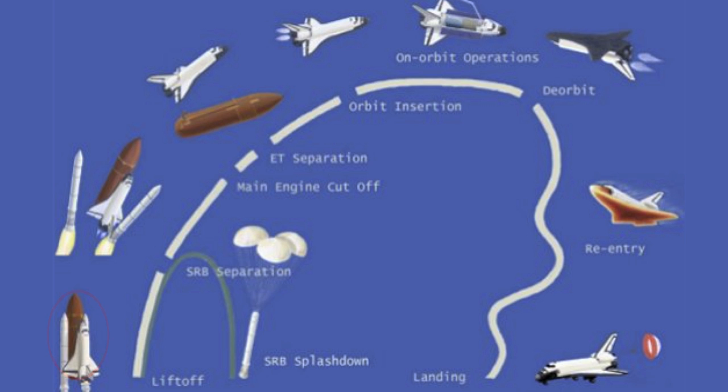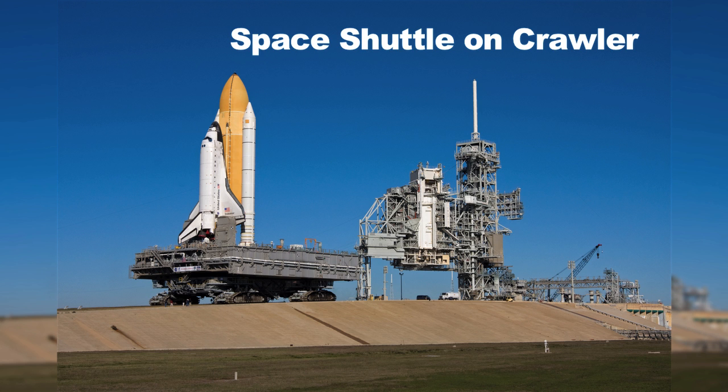The space shuttle with its external tank and two solid rocket motors goes through different phases of operations. Initially, it has to go through a ground processing operation — it doesn't start out at a launch pad. The shuttle may have flown before, landed, and needs to be cleaned, inspected, and have parts rebuilt. There's a whole set of processes to get it to a launch pad. For a reusable mission like the shuttle, the concept of operations reaches all the way back to that ground processing phase.